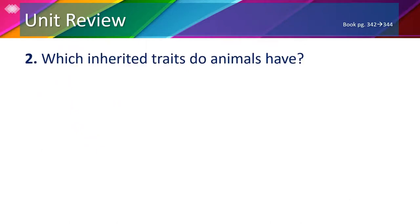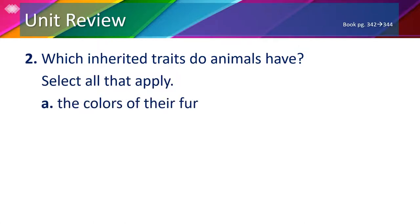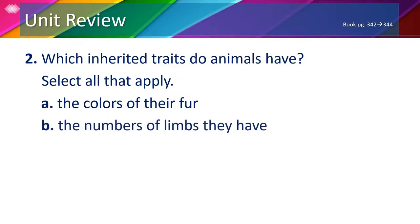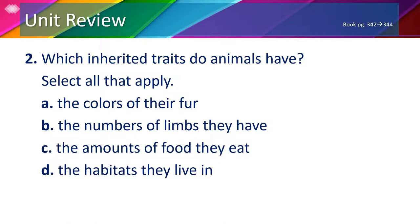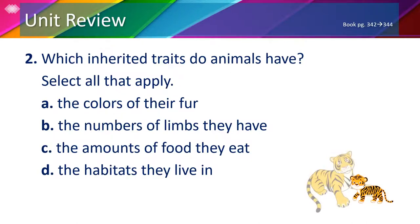Number 2: Which inherited traits do animals have? Select all that apply, so there may be more than one answer. Is it A. The colors of their fur? B. The number of limbs or legs they have? C. The amounts of food they eat? Or D. The habitats they live in? Remember what we said about the baby tiger — it inherits its color from its parent, so A is correct. And it also has four legs, just like its parent, so B is also correct.